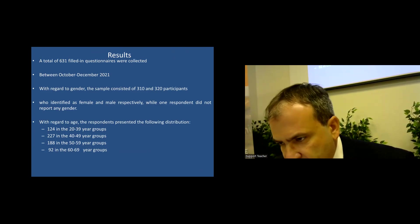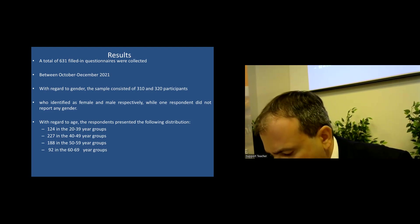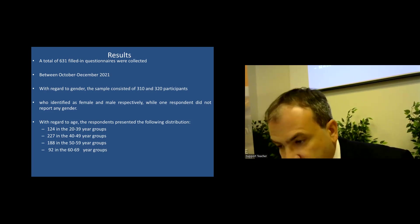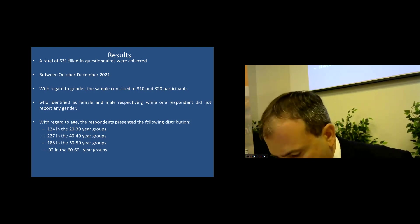Let's have a look at some of the results of the questionnaire. A total of 631 questionnaires were collected during the time period between October and December of 2021. With regard to gender, the sample consisted of 310 and 320 participants who identified as female and male respectively, with only one respondent having not reported any gender. With regard to age, the respondents presented the following distribution: 124 in the 20 to 39-year group, 227 in the 40 to 49-year group, 188 in the 50 to 59-year group, and finally 92 in the 60 to 69-year group.